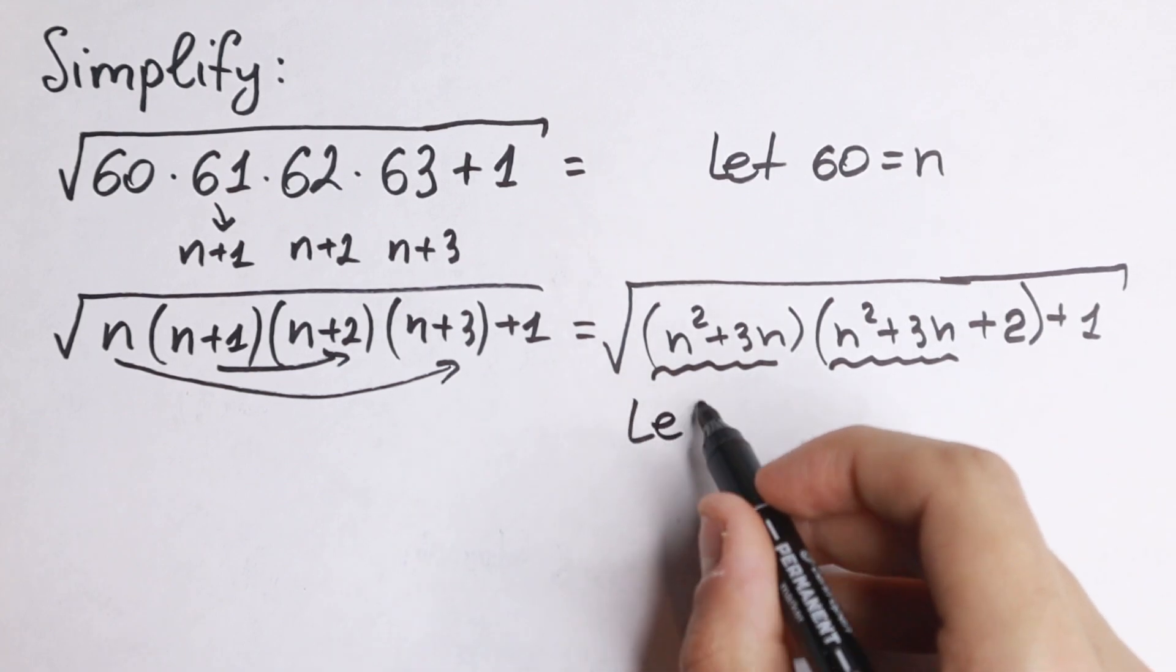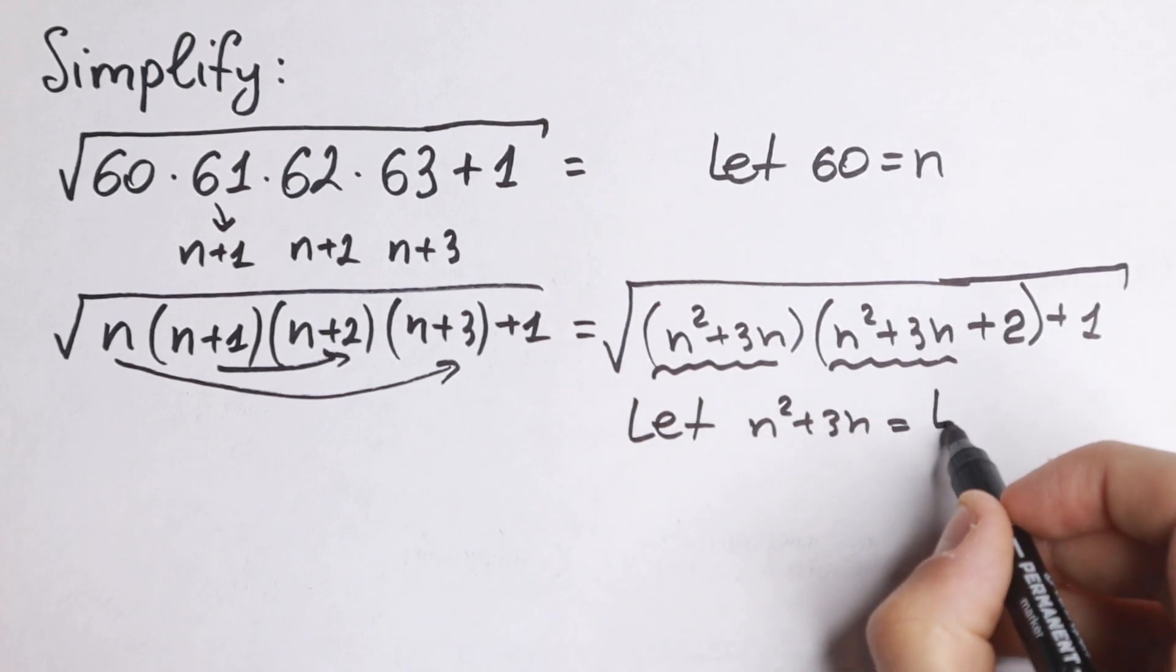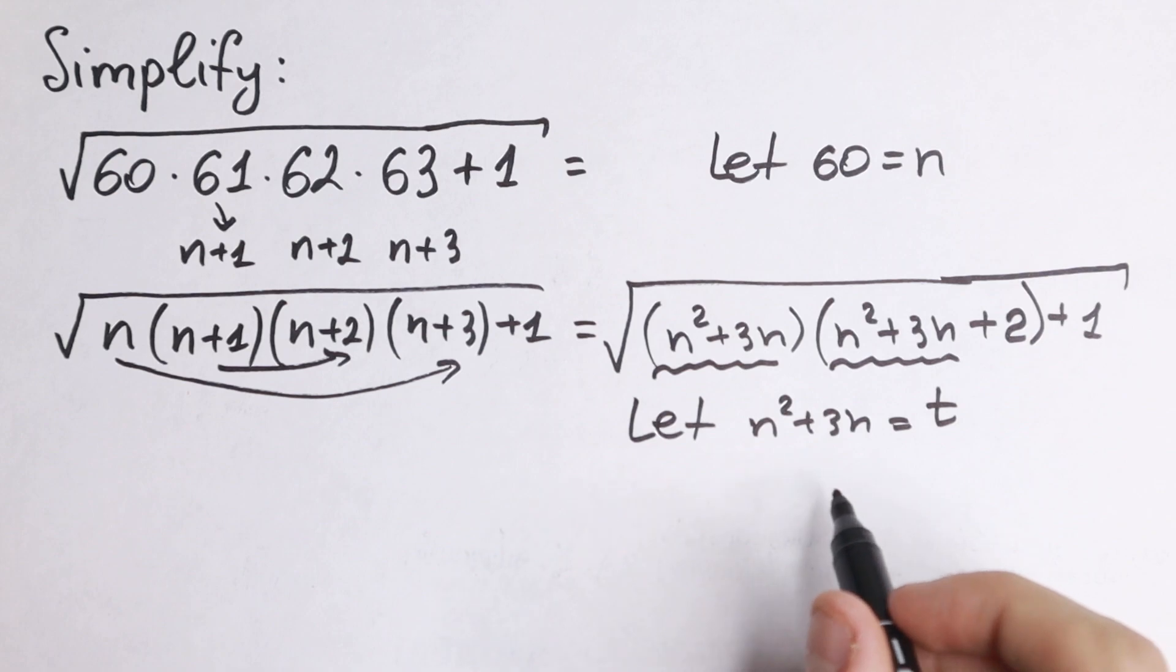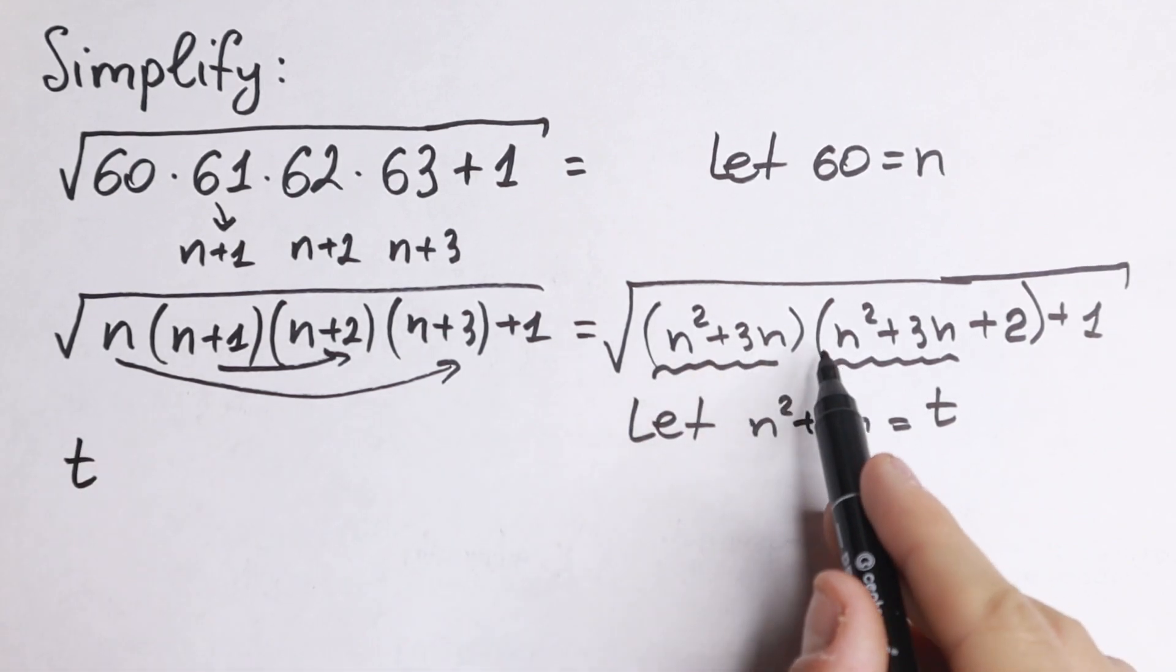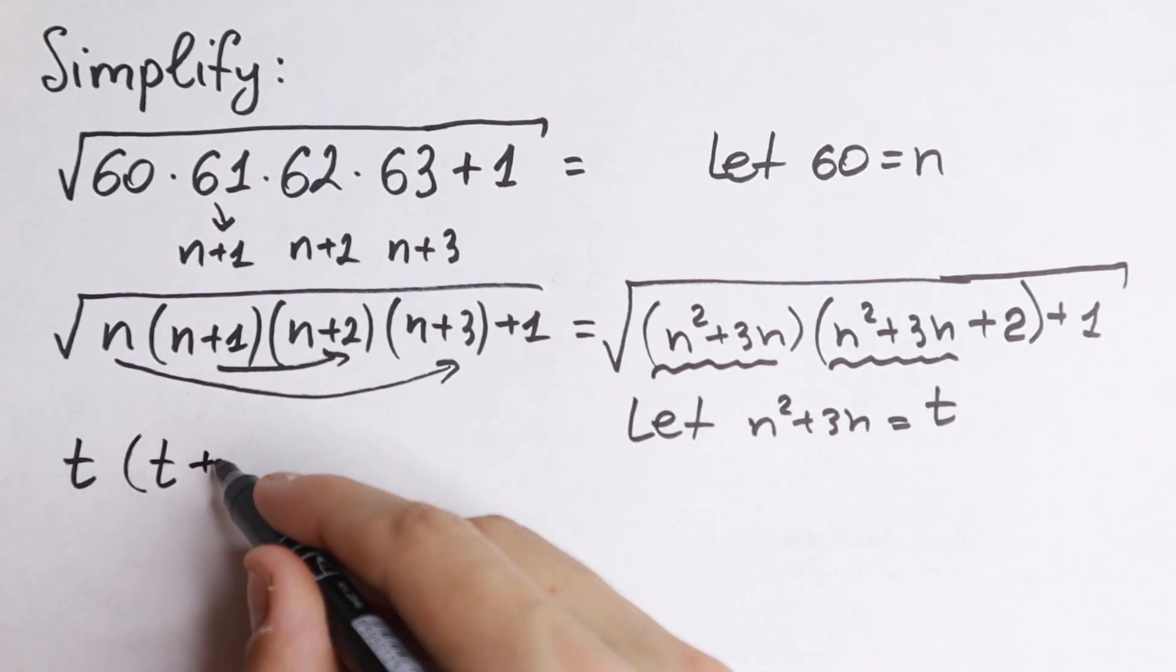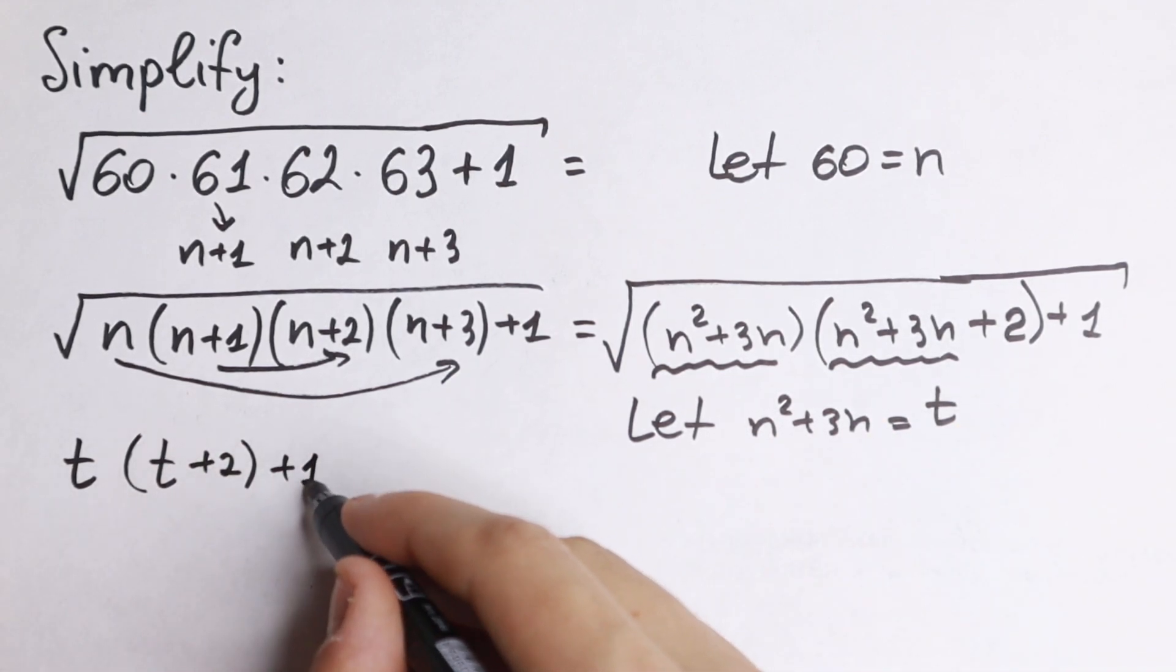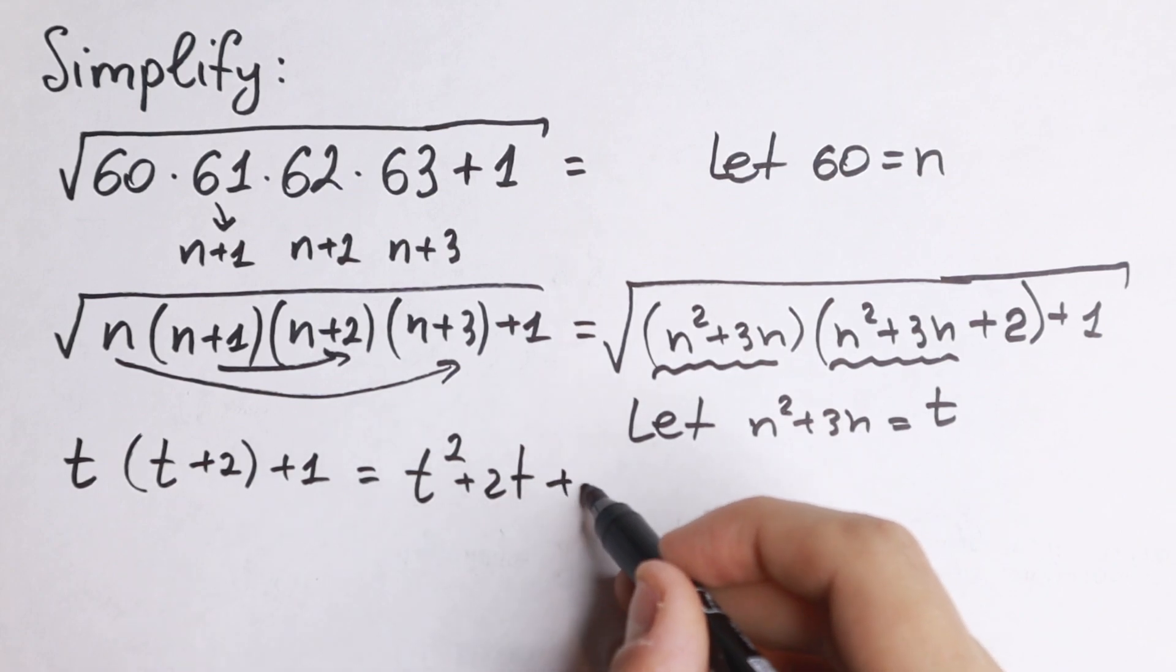If we let n square plus 3n equal to t, what we will have? We will have t times t plus 2 and plus 1. If we simplify this, we will have t square plus 2t and plus 1.